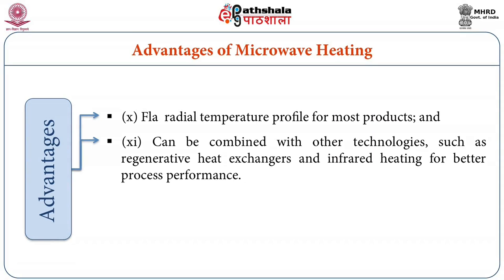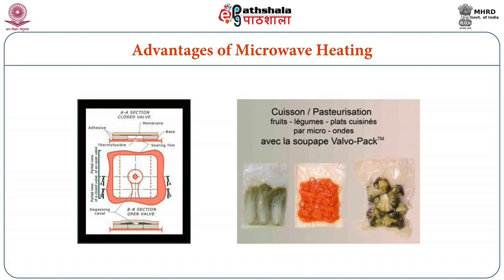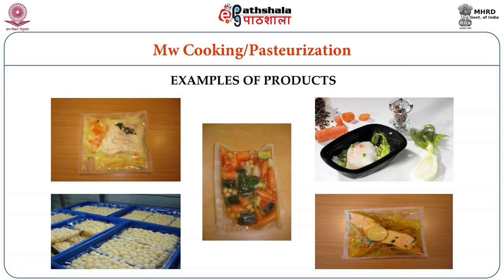Microwave heating can also be combined with other technologies like heat exchangers and infrared heating for better performance. You can use a slight temperature with other heat exchanging systems to get better quality in the final product. Microwave heating can be used for any number of products: fruits and vegetables, milk, meat, chips, chocolates, sausages, dry items, non-veg items, bread, biscuits, cakes, and blanching of vegetables.